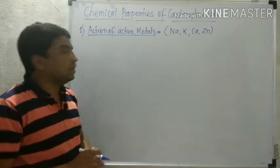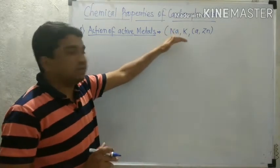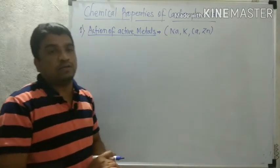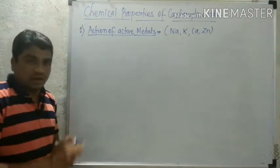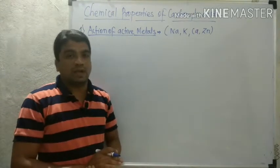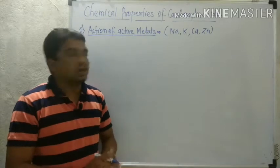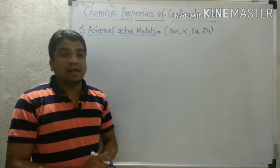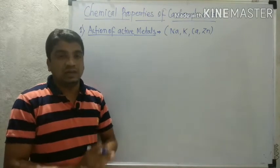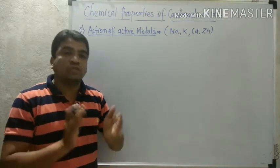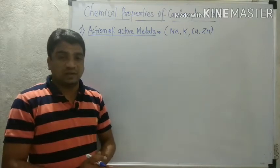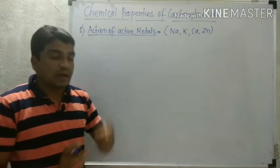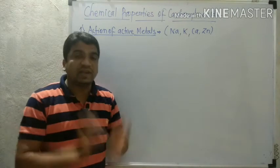We are going to discuss the action of these active strong metals — sodium, potassium, calcium, and zinc — on carboxylic acid. When active metals react with carboxylic acid, the reaction produces the corresponding salt of the acid: sodium salt if sodium is taken, potassium salt if potassium is taken, calcium salt if calcium is taken, and zinc salt if zinc is taken.